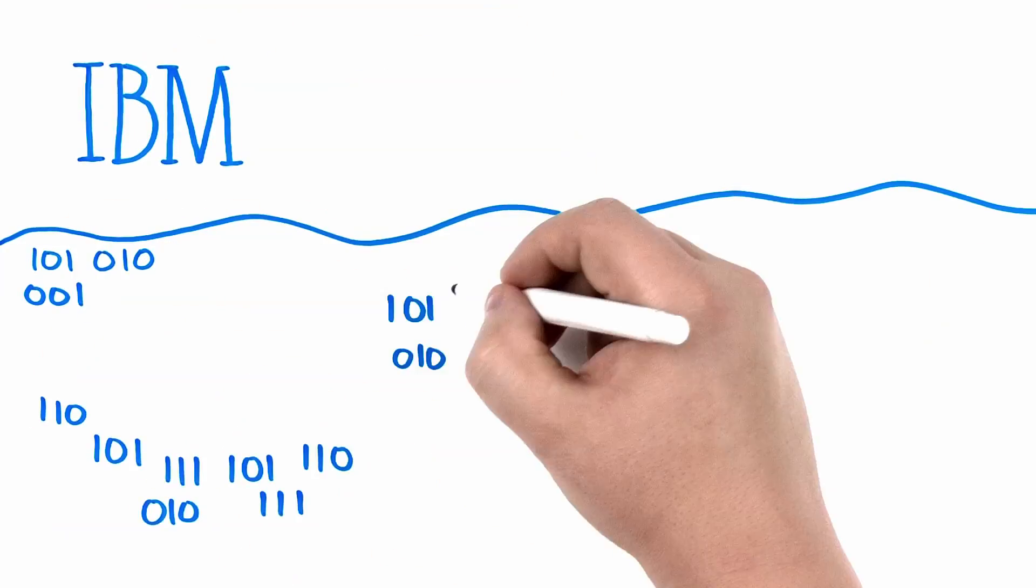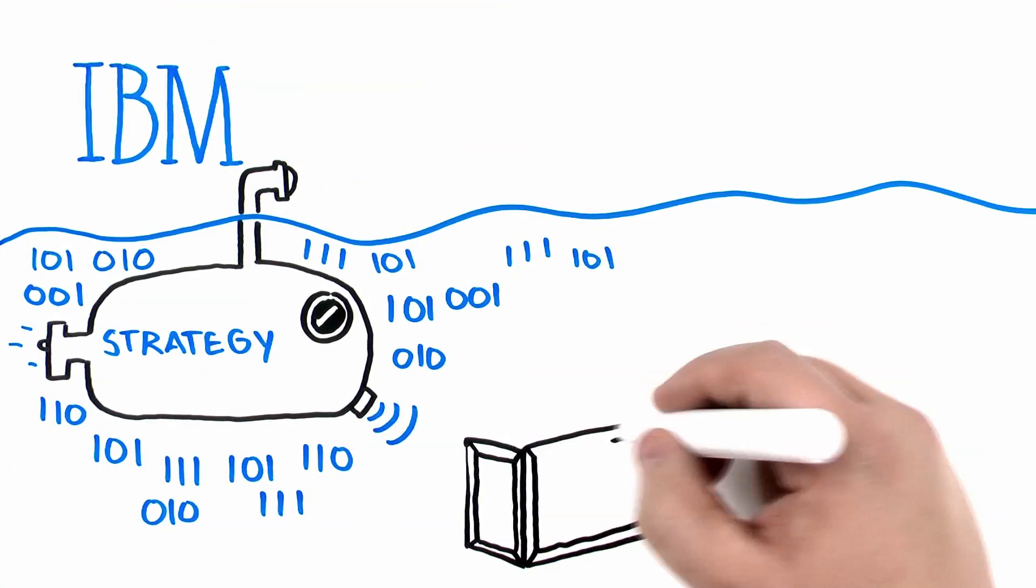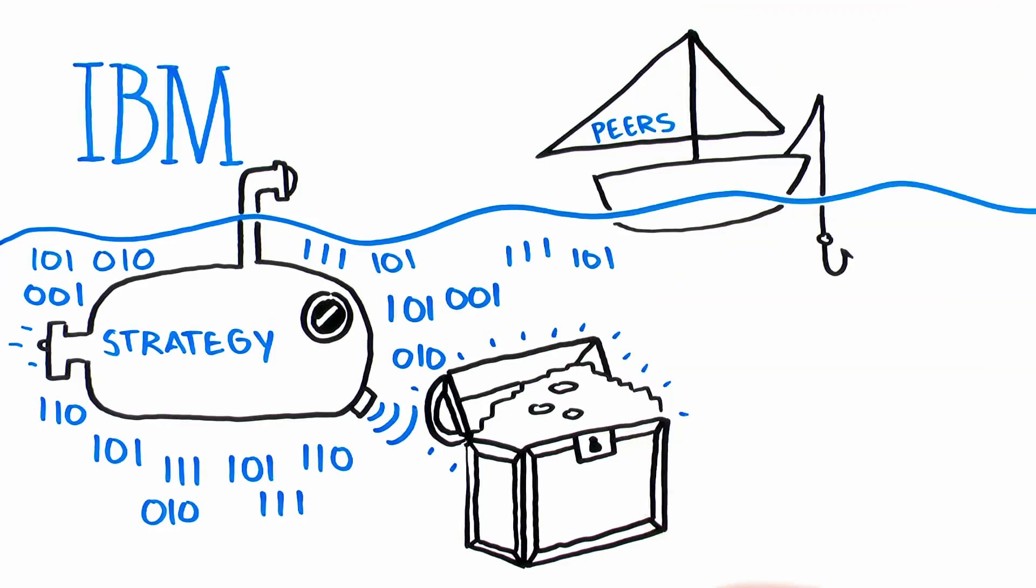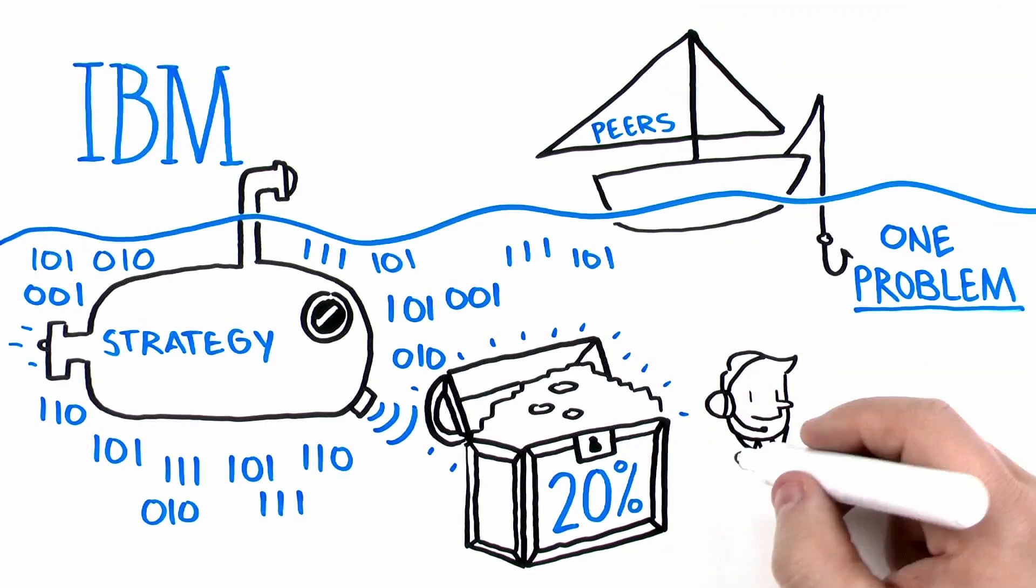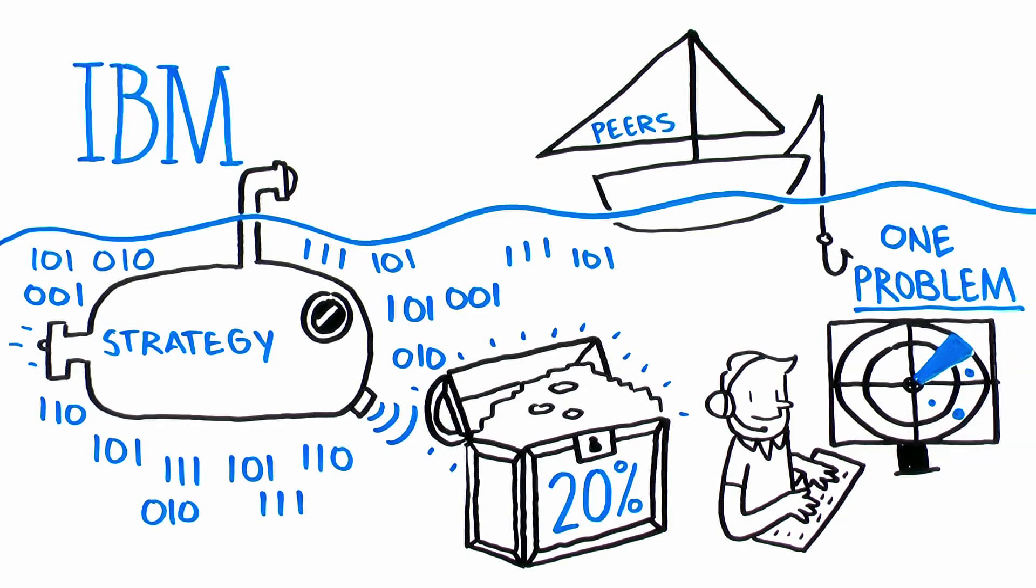IBM says companies that have a big data strategy will soon financially outperform their peers by 20%. There's just one little problem. You need people who are skilled enough to read the data.